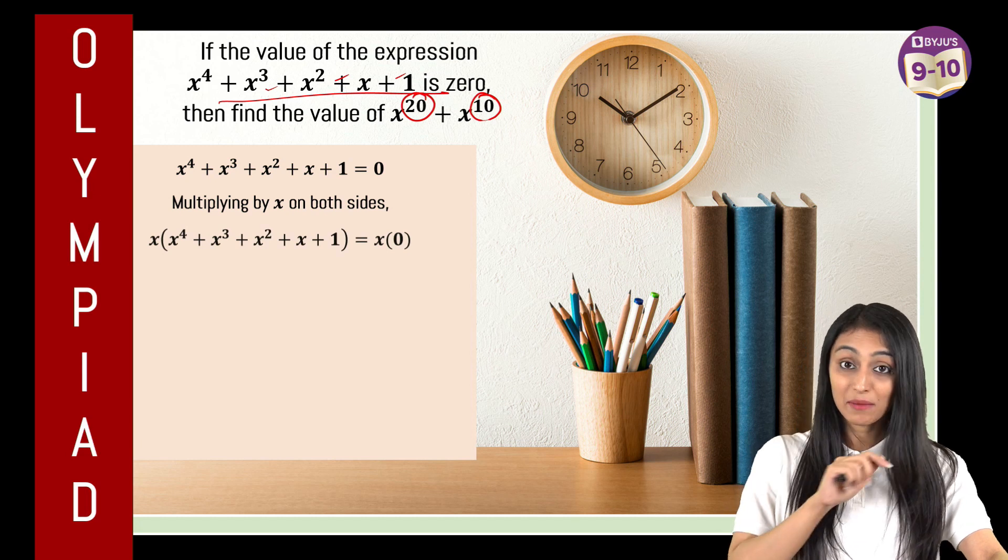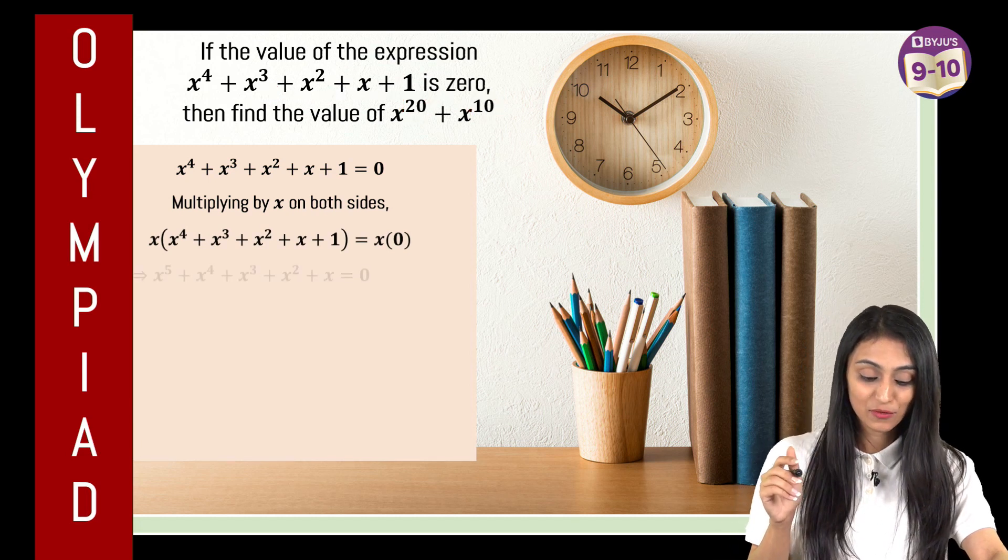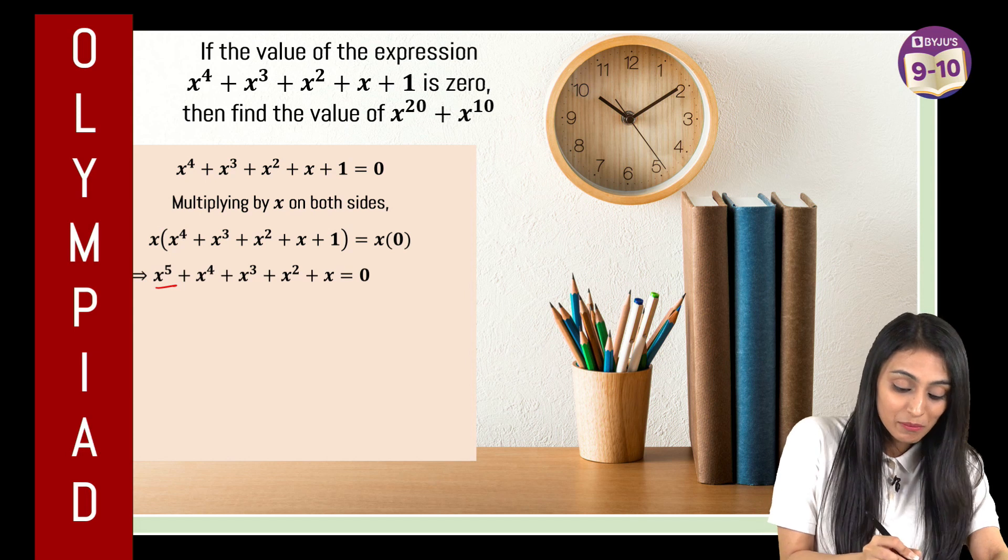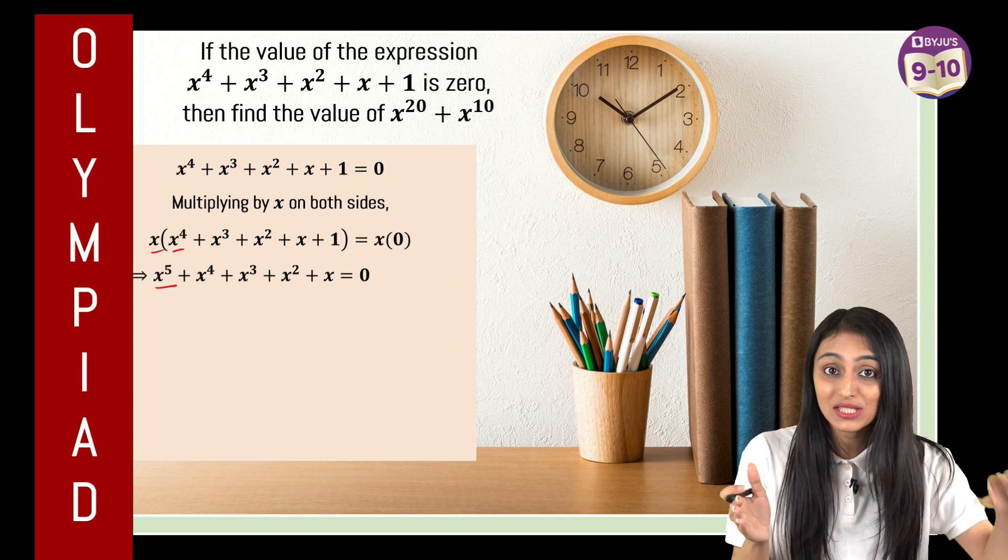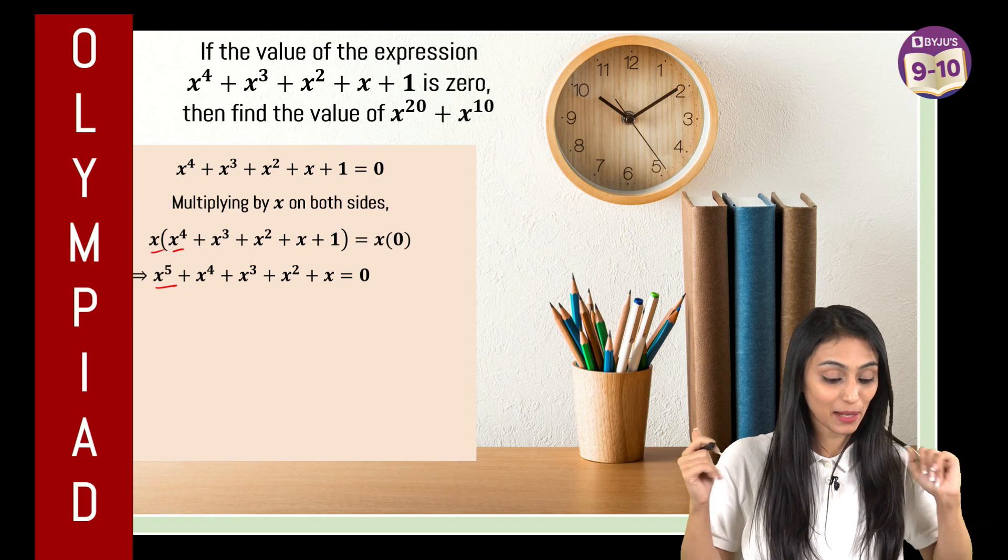So what this becomes, if I multiply x on both sides, the left side over here is going to be x to the power 5, because here the bases are same and there is multiplication symbol between them, so the powers get added up.